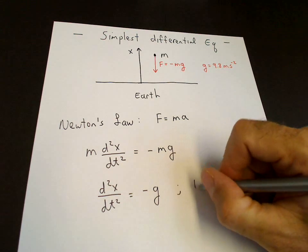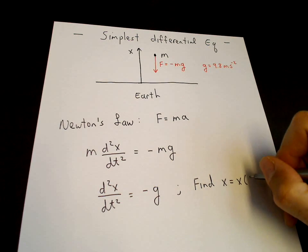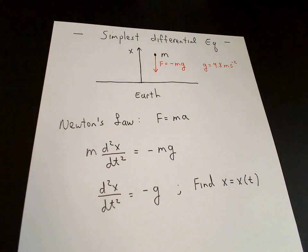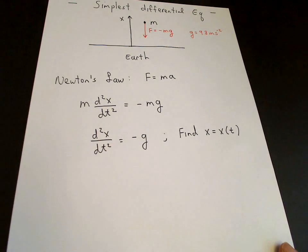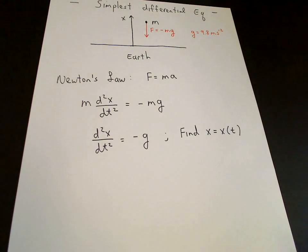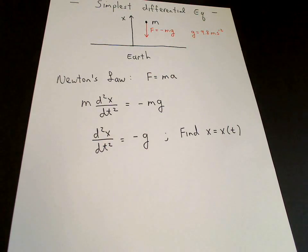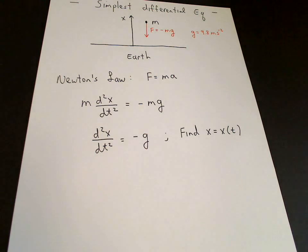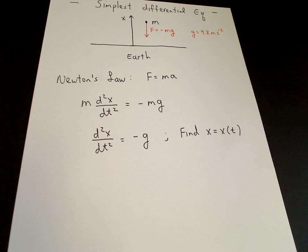And we want to solve this equation for x, which is here a function of time. This is a simple differential equation because the right hand side is a constant. It's simple particularly because the right hand side doesn't depend on x. And because of that simplicity, we are able to solve this differential equation just by taking antiderivatives.